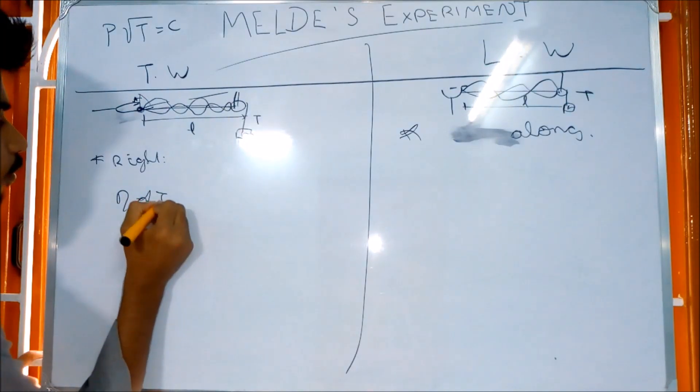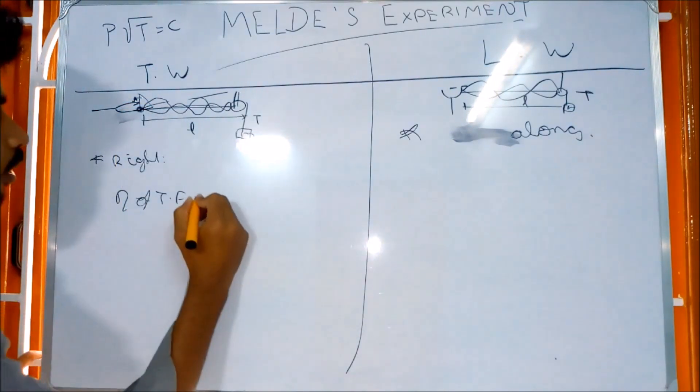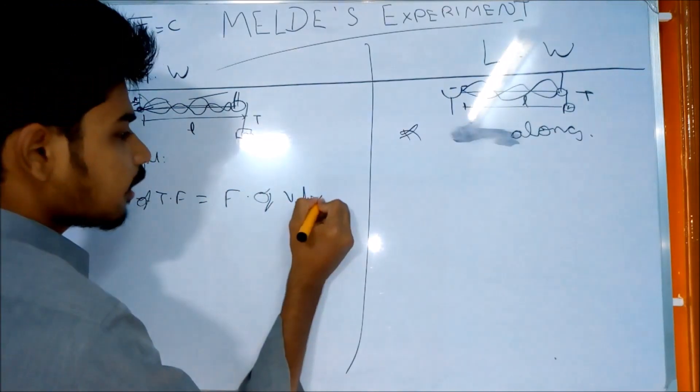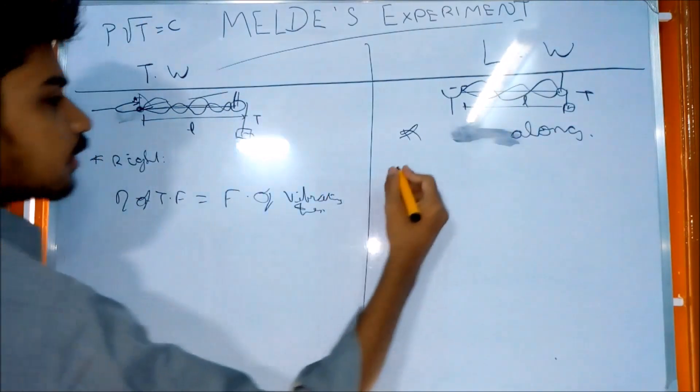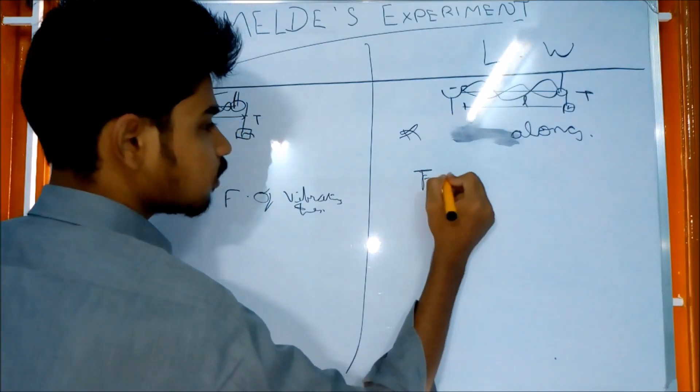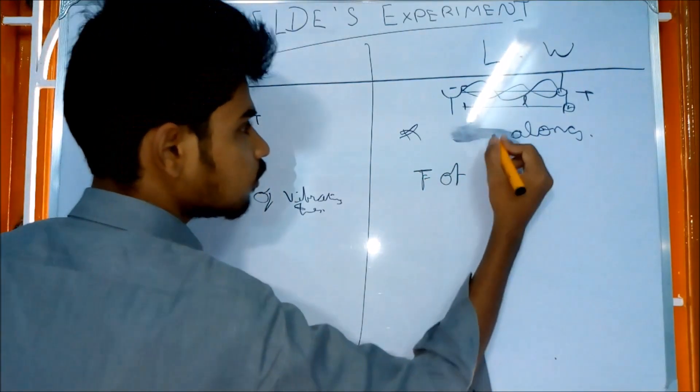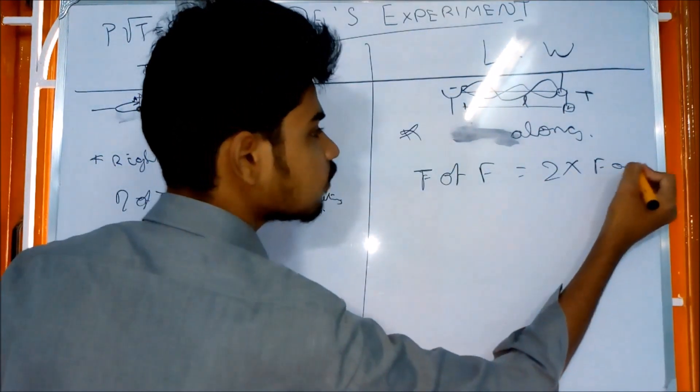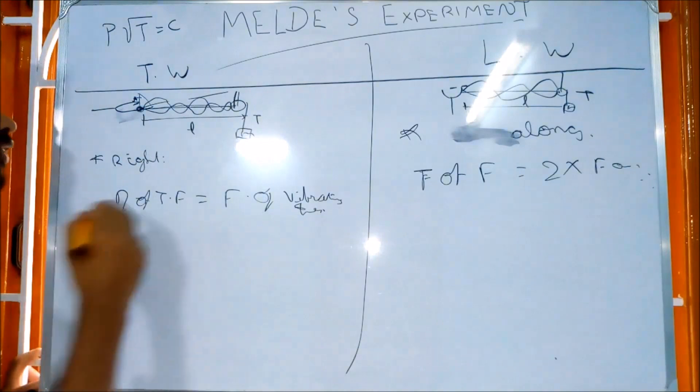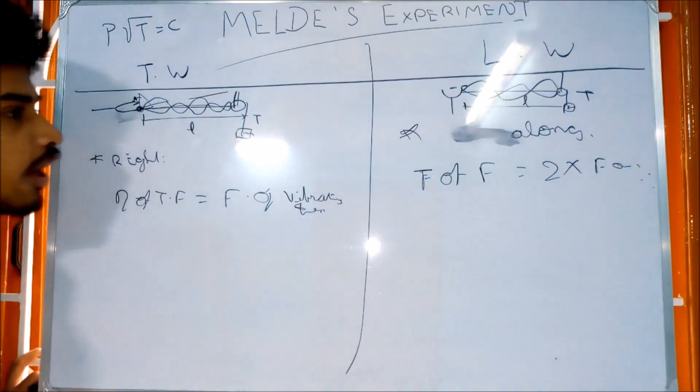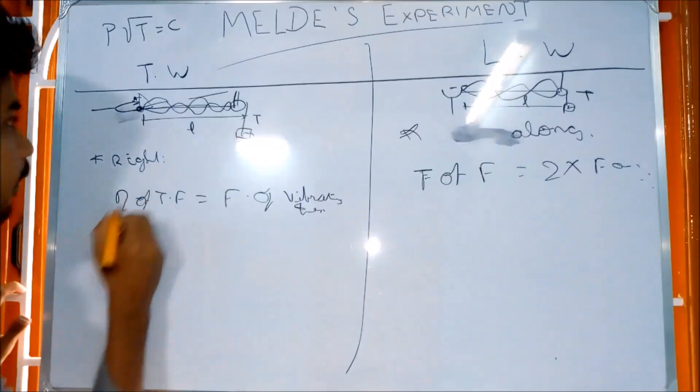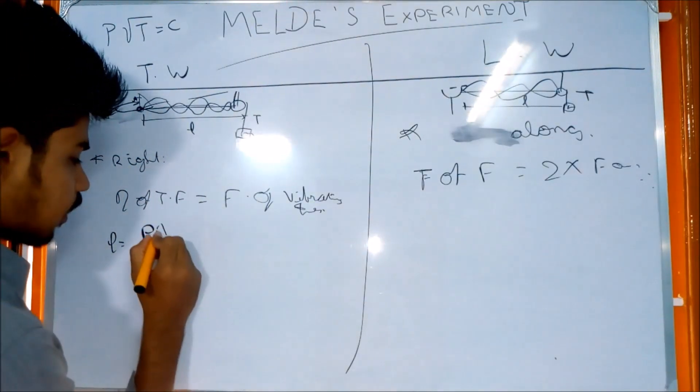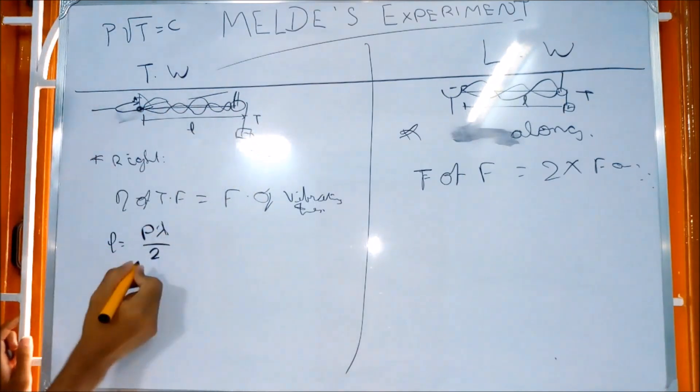Frequency of tuning fork is equal to frequency of vibrating thread. So length is equal to P lambda by 2. This is the formula.